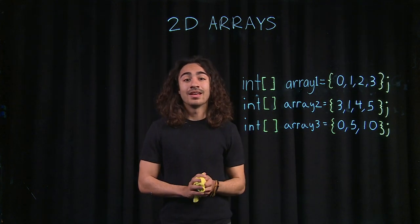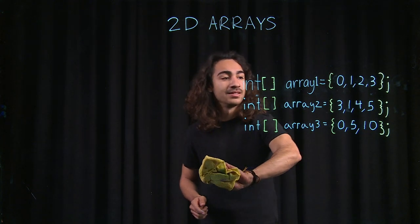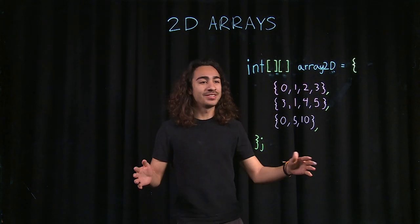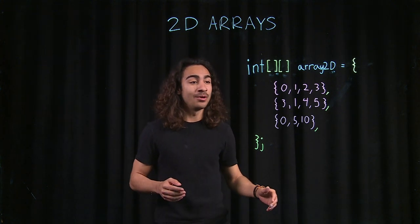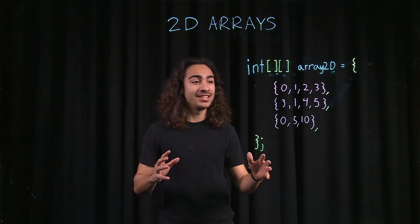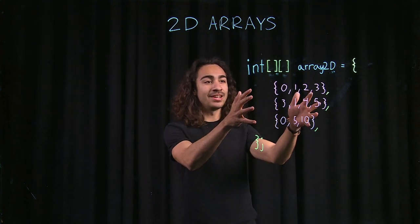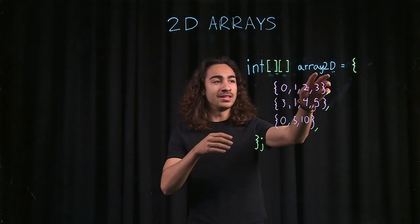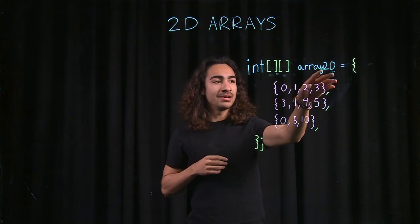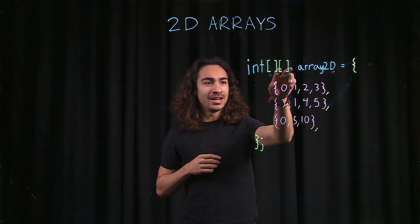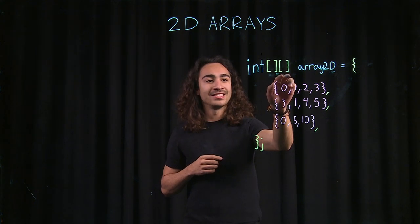To do that, all we have to do is—okay, what did I just do? I took all the arrays from my previous declarations, and I stuck them into this other array, which I called array2d. And what I did to declare this array2d was I just added another bracket in front of the int. This is what tells Java that I'm making a 2D array.